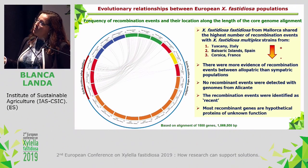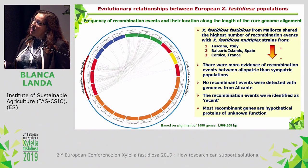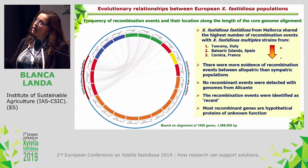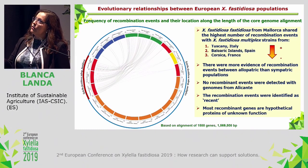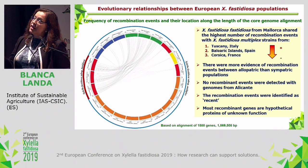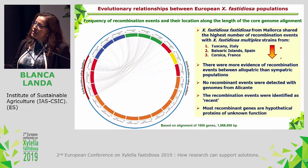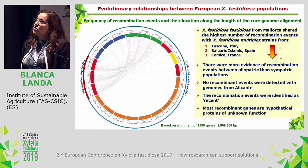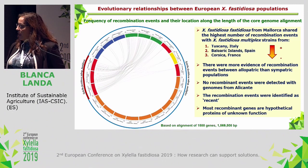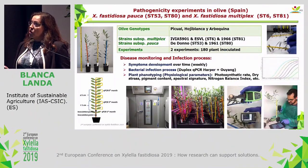Looking at the frequency and location of recombination events along the genome, we compared recombination events between subspecies fastidiosa isolates from Mallorca and subspecies multiplex from Europe. We found that these isolates share the highest number of recombination events with isolates from Tuscany, then with isolates from Mallorca, then with isolates from France. There is more evidence of recombination between allopatric and sympatric populations — as you may recall, subspecies fastidiosa and subspecies multiplex are both present on the same island in Mallorca. We also noticed no recombination events with Alicante isolates, and most recombination genes were hypothetical proteins of unknown function.